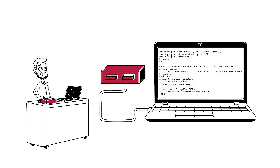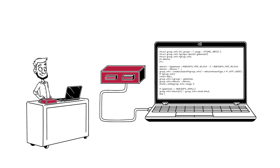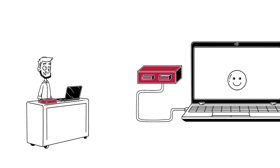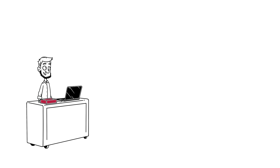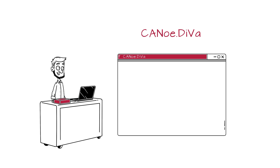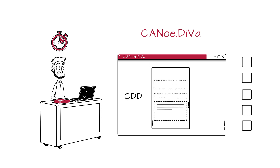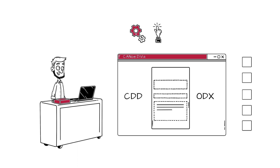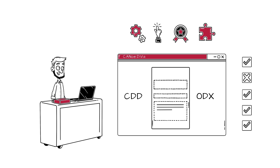The ECU is flashed with this code at high speed using the Vector tool VFlash. The newly created ECU sample can now be tested. For this purpose, Vector's test generator Canoo Diva generates thousands of standard tests and specific tests based on the diagnostic description. These tests run automatically in Canoo. They are started at the push of a button, guarantee high quality and can be easily integrated into existing test environments.